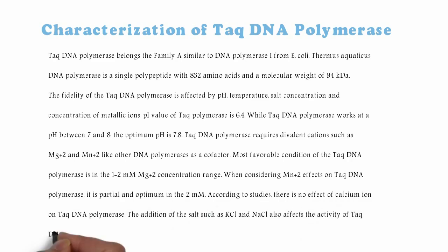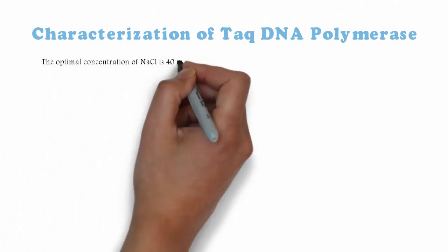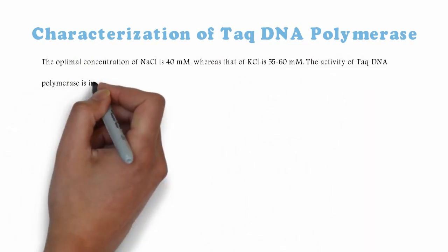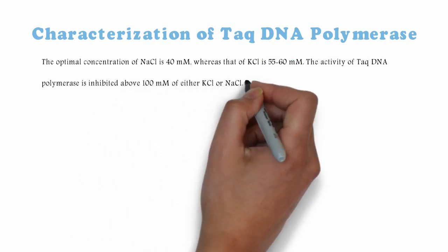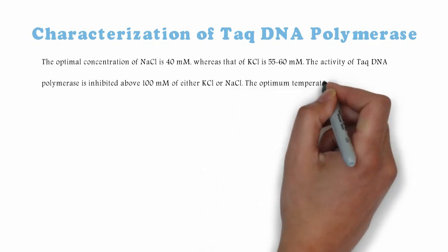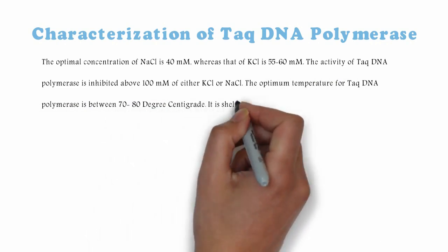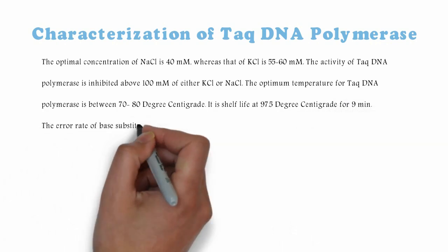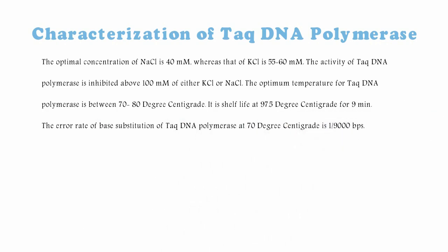The addition of salts such as KCl and NaCl also affects the activity of Taq DNA Polymerase. The optimal concentration of NaCl is 40 mM, whereas that of KCl is 55 to 60 mM. The activity of Taq DNA Polymerase is inhibited above 100 mM of either KCl or NaCl. The optimum temperature for Taq DNA Polymerase is between 70 to 80°C, and it is stable at 97.5°C for 9 minutes. The error rate of base substitution of Taq DNA Polymerase at 70°C is 1 per 9000 base pairs.